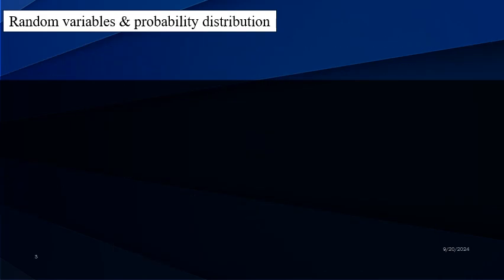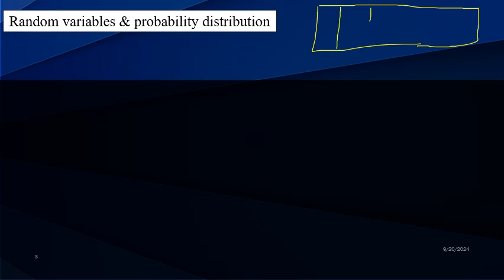Coming to the formal definition of random variable — in the last example we had seen a table for the example of tossing a coin three times or three coins together. In that table, random numbers appeared in the first row. Those random numbers were 0, 1, 2, and 3.